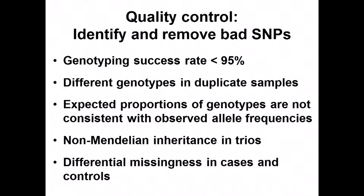Individual variants can also be evaluated. If a SNP has low genotyping success across individuals, the resulting genotypes may not be accurate. Including purposeful duplicate samples helps identify variants inconsistent between those samples — these are poorly-performing assays that should be removed. You can look at genotype frequencies versus allele frequencies to assess heterozygote detection accuracy, check inheritance patterns in related individuals, and look for differential missingness between cases and controls that could generate bias.